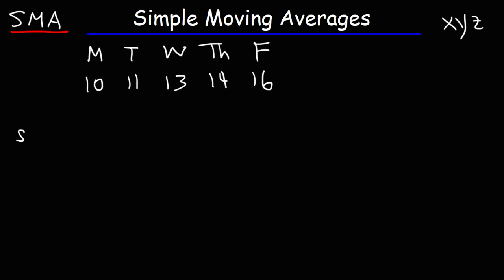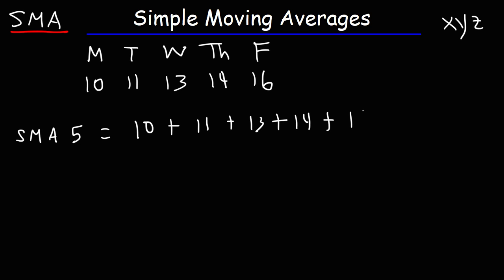To calculate the simple moving average — this will be the SMA 5 because it's a five-day moving average — it's going to be the sum of the closing prices for those five days. So that's 10 plus 11 plus 13 plus 14 plus 16 divided by 5, which gives us an SMA 5 of $12.80.